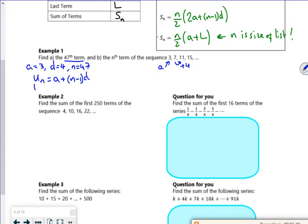So I'm going to use UN is A plus N minus one D. So U forty-seven, the forty-seventh term, is three plus forty-seven take one times D. Wait, D is four. So the forty-seven term, U forty-seven will be three plus forty-six times four, which is a hundred and eighty-seven.